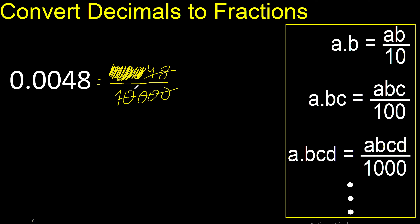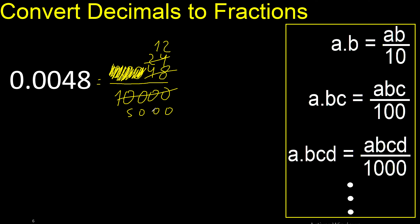Can be simplified because it can be divided by the same number. Divided by 2, divided by 2 — 20-something over 5,000. Can be divided by 2, divided by 2: 12.